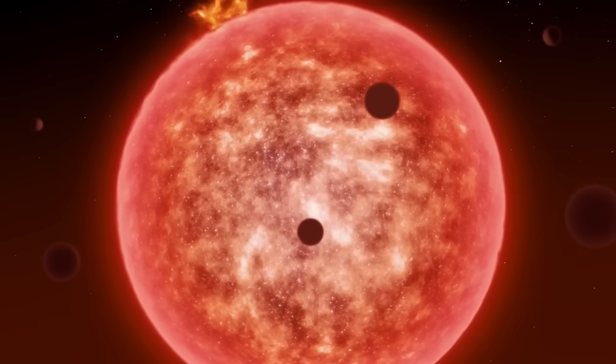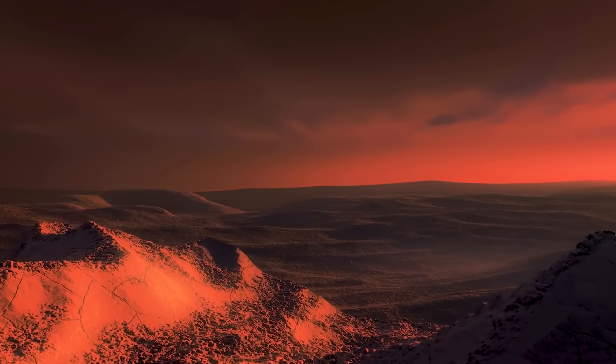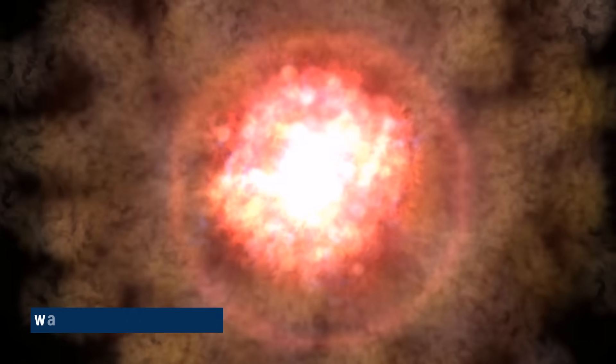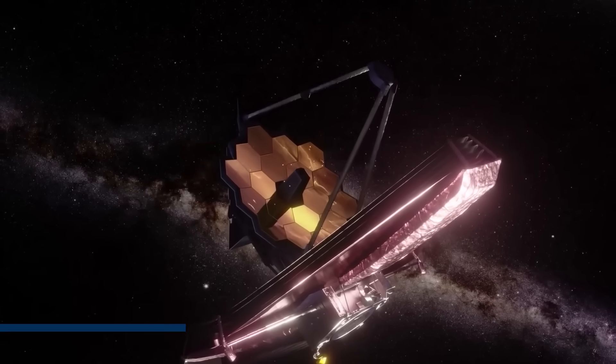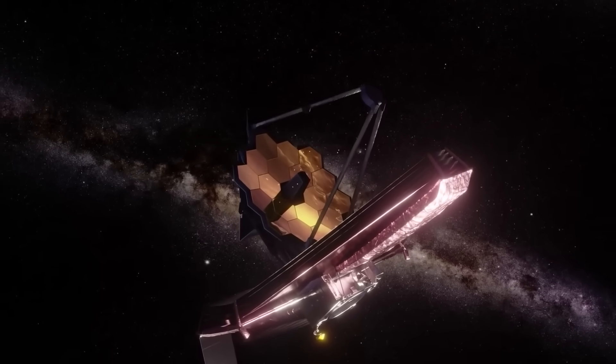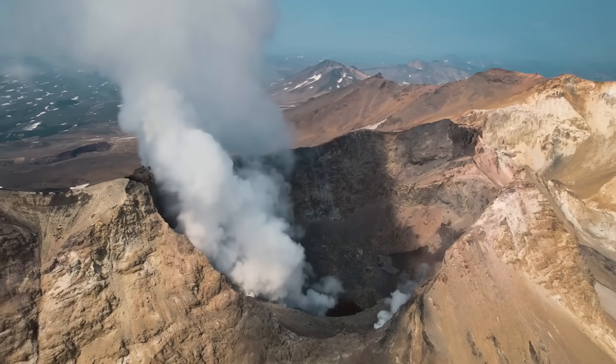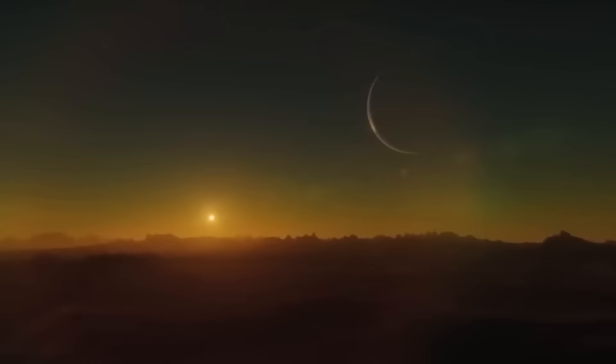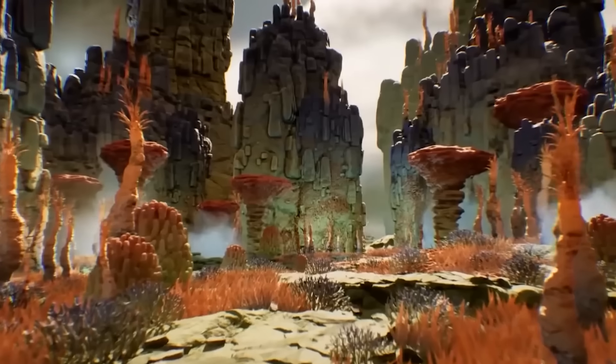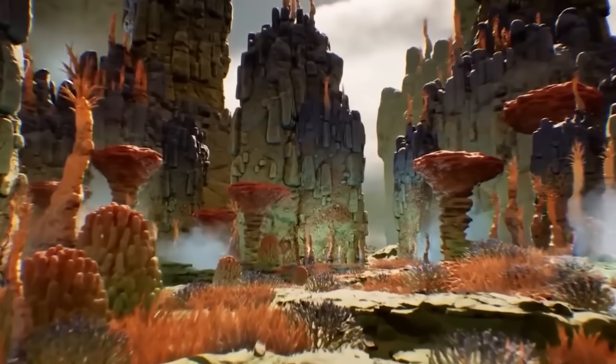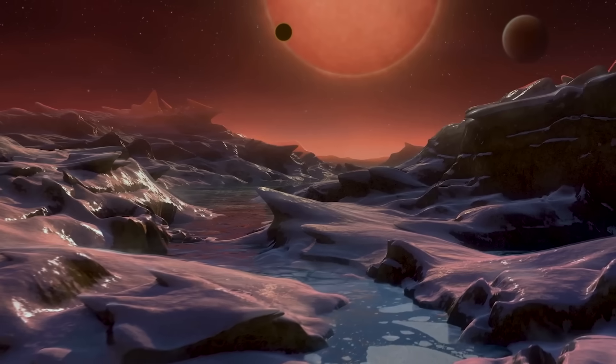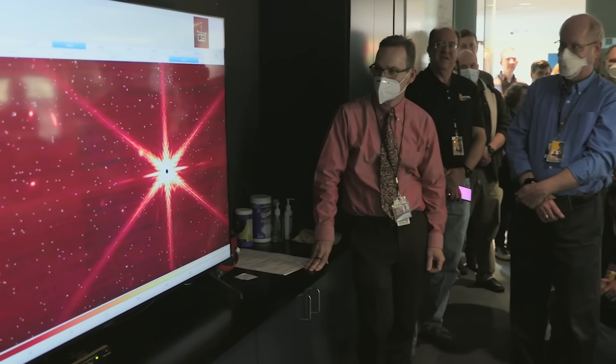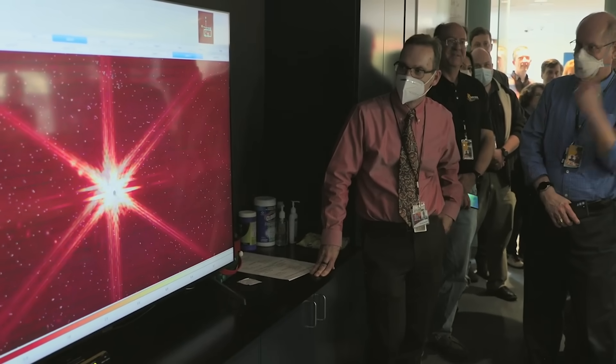Fourth, there might be signs of internal activity, like volcanic heat. Some patterns in the thermal map suggest areas that are warmer than expected. That could mean the planet's core is still hot, which might also help maintain an atmosphere, just like Earth's volcanoes release gases that replenish ours. Every new piece of data builds a bigger picture. And while we still don't know if Proxima b is truly habitable, we now know it's not just a lifeless rock - it's dynamic, active, and full of mystery.